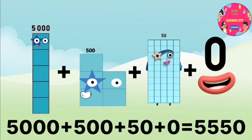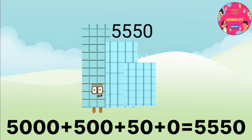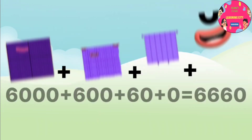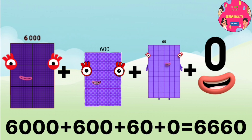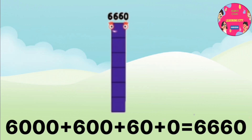5000 plus 500 plus 50 plus 0 equals 5550. 6000 plus 600 plus 60 plus 0 equals 6660.